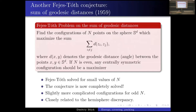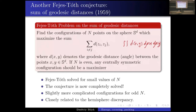You could also look at the geodesic distance instead of Euclidean distance and ask which measures maximize the corresponding energy integral. The answer here is that any centrally symmetric Borel probability measure is a maximizer of the corresponding continuous energy integral. We will see a proof of this fact later.